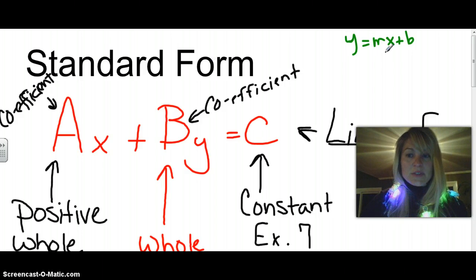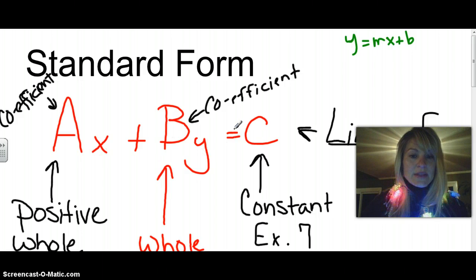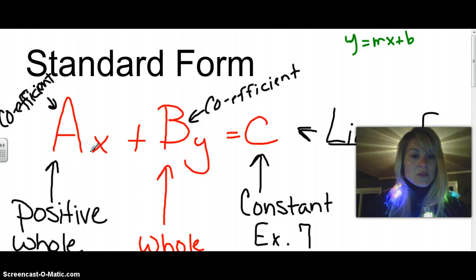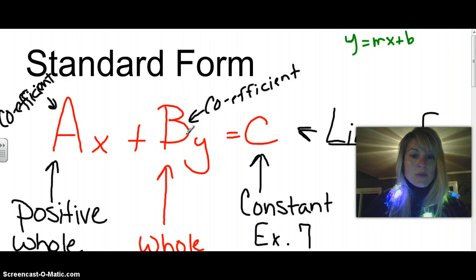Standard form, just like slope-intercept form, has an x and a y, but the difference is both the x and y are on the left side of the equals. In slope-intercept form, the y is on the left and the x is on the right. So in standard form we have a coefficient times x, plus a b coefficient times y, plus c, which is the constant.